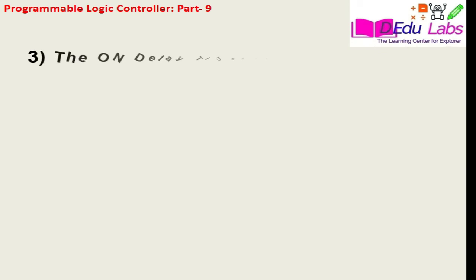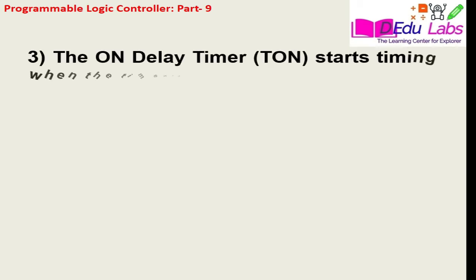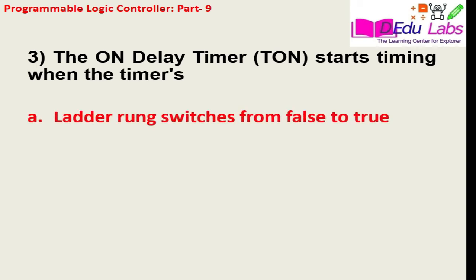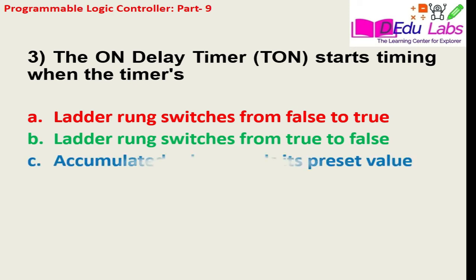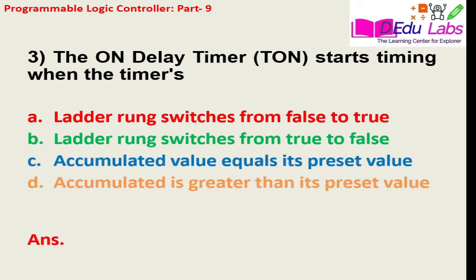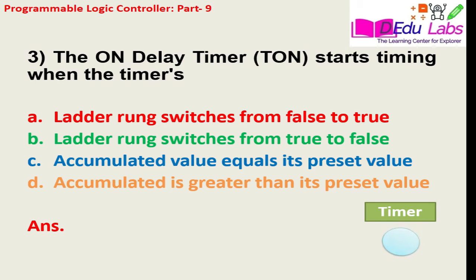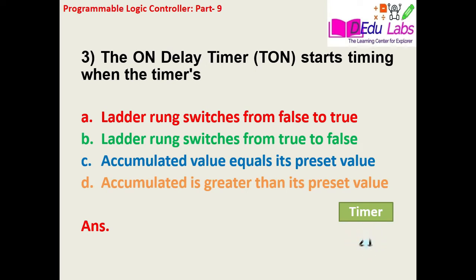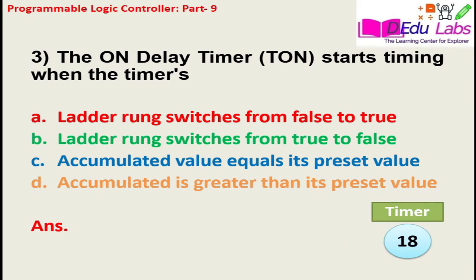Question number three: the on-delay timer TON starts timing when the timer's — option A: ladder rung switches from false to true, option B: ladder rung switches from true to false, option C: accumulated value equals its preset value, option D: accumulated value is greater than its preset value. The answer is option A — when the ladder rung switches from false to true condition.